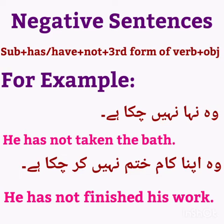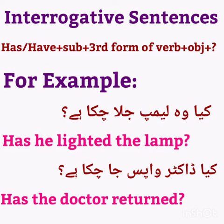The last one is interrogative sentences. Formation: first has/have, then subject, plus third form of verb, plus object, and at the end a question mark. For example: क्या दीपक जला चुका है? — 'Has he lighted the lamp?' क्या डॉक्टर वापस जा चुका है? — 'The doctor' is a singular noun, so we will write 'has': 'Has the doctor returned?'